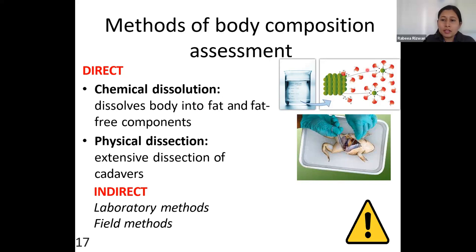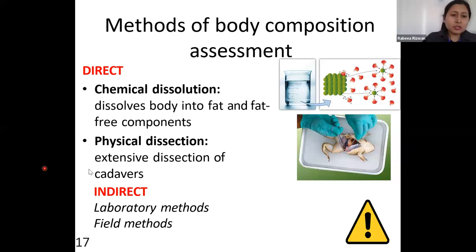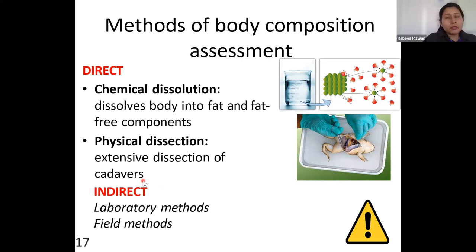This is called physical dissection — physically dissecting or opening the body to study what it is composed of. I gave the example of a frog, but this also applies to the human body. This is extensive dissection of cadavers — dead bodies — and we do not perform this for living human beings. These are for autopsies or forensic cases. Indirect methods, however, are convenient and can be used to evaluate the body composition of living human beings.